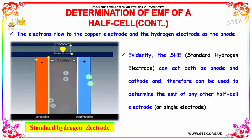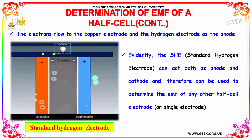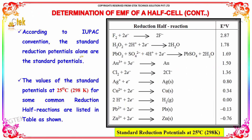Evidently, the SHE can act both as an anode and a cathode, and therefore can be used to determine the EMF of any other half cell electrode or single electrode. According to IUPAC convention, the standard reduction potentials alone are the standard potentials. The values of these standard potentials at 25 degrees Celsius for some common reduction half reactions are listed here, with their values in volts.